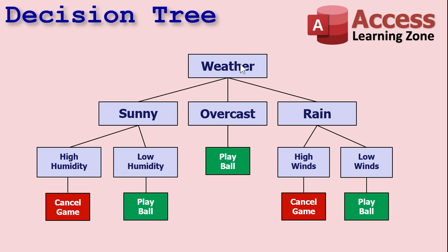For example: are we going to play ball today? What's the weather look like? If it's sunny, overcast, or rain? If it's sunny, is the humidity too high? That's a problem down here in Florida. We're going to cancel the game if the humidity is too high. Low humidity — play ball. If it's just overcast, play ball. Is it raining? How windy is it? Real high winds, cancel the game. Low winds, play ball. Basic, simple decision tree.